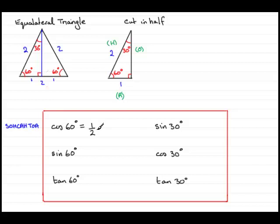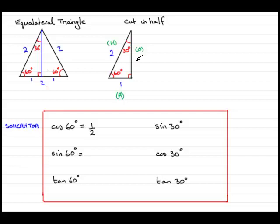If you type the cosine of 60 degrees into your calculator, you should get a half, or 0.5 as a decimal — that's an exact value. Now when it comes to finding the sine of 60 degrees, sine compares the opposite with the hypotenuse. But I don't know what the opposite side is yet.